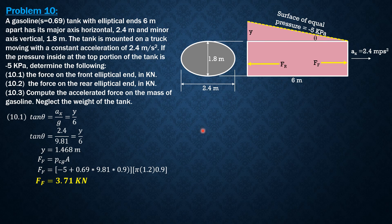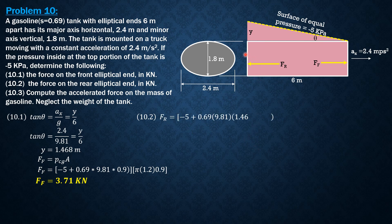Then for the second question, FR force on the rear end. So it is also pressure at the centroid times area, where the pressure at the centroid is negative 5 plus 0.69 times 9.81 times we go down by y which is 1.468, then another 0.9 to reach the centroid of the ellipse, then the area phi times 1.2 times 0.9. So here, we can solve FR equal to 37.42 kilonewtons.